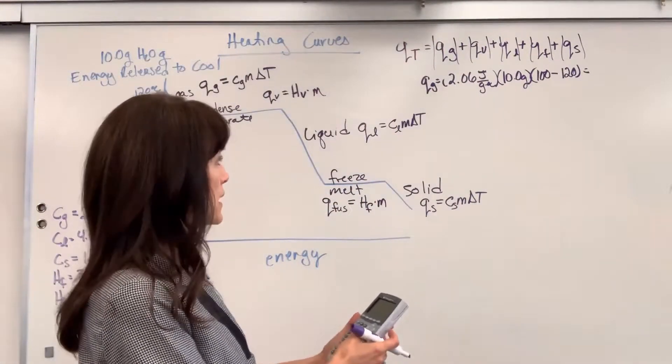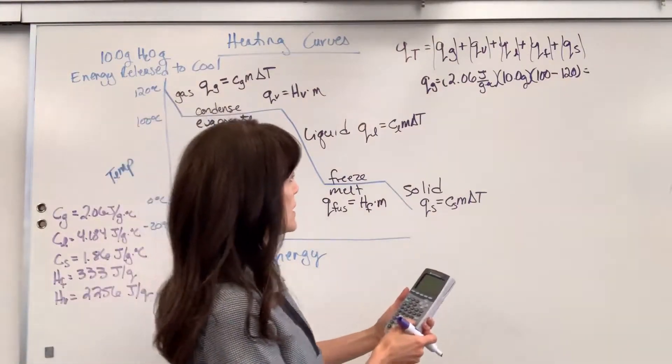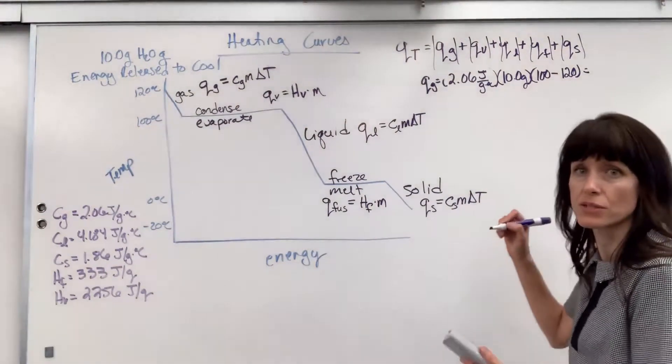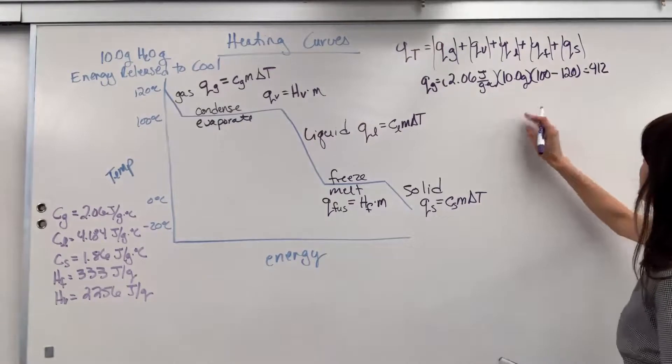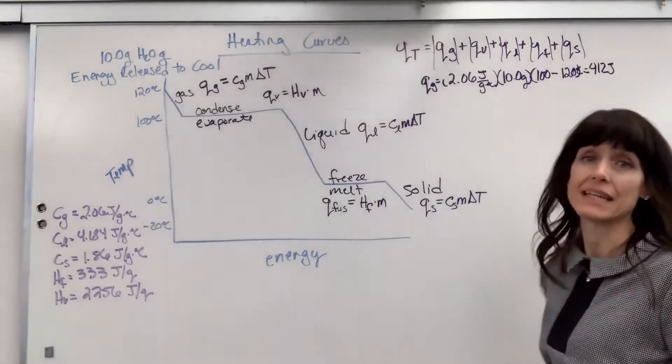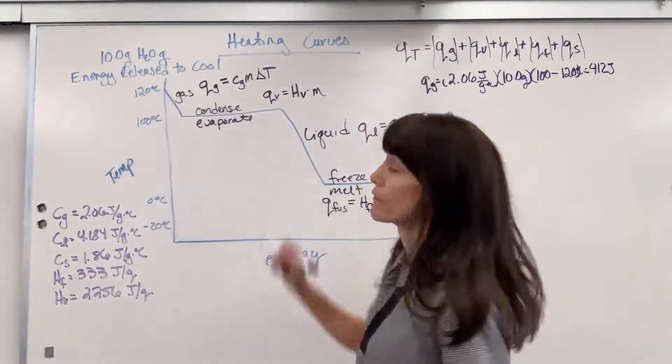So, let's plug this in. 2.06 times 10 times 20. That is going to give us 412 joules. Energy released when we cool down the gas.